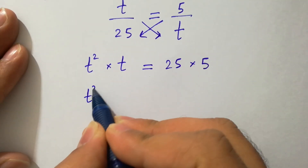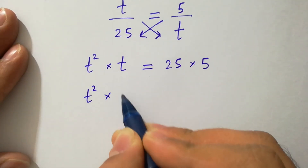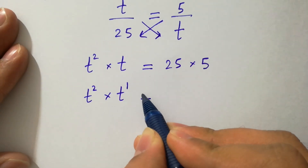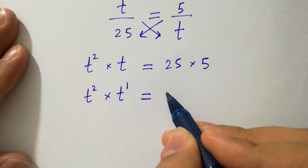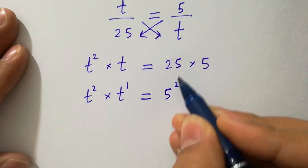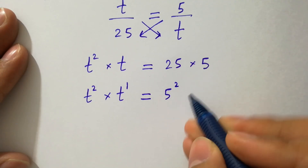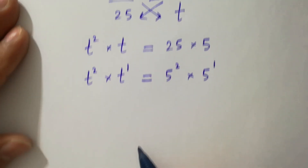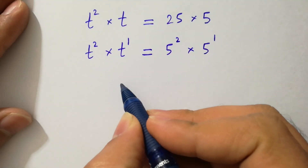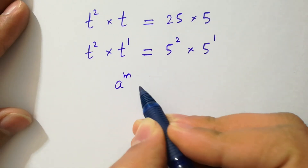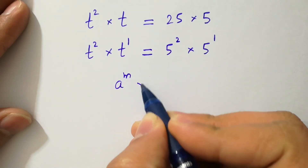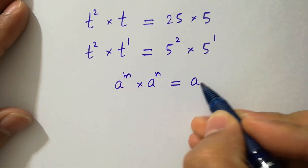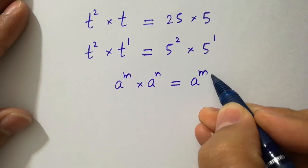t squared times t is the same as t to the power 3, equal to 25, which is the same as 5 squared. 5 times 5 — 25 times 5 is the same as 5 to the power 3. As we know, a to the power m times a to the power n equals a to the power m plus n.